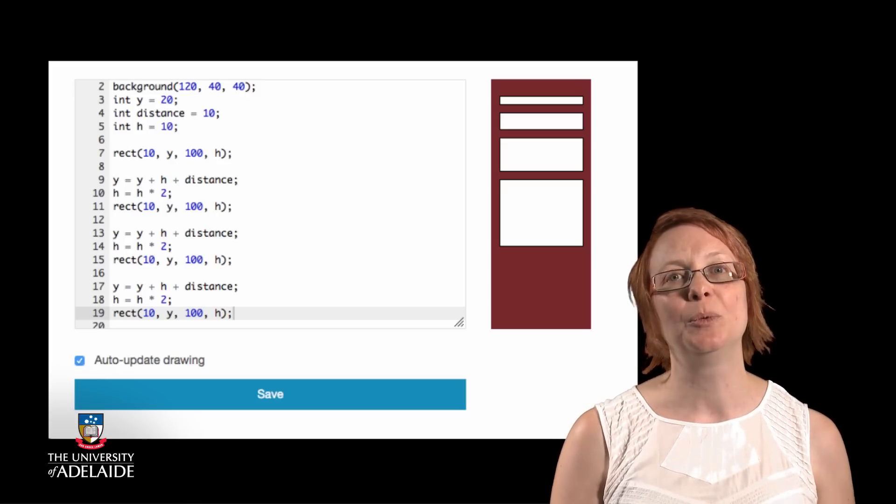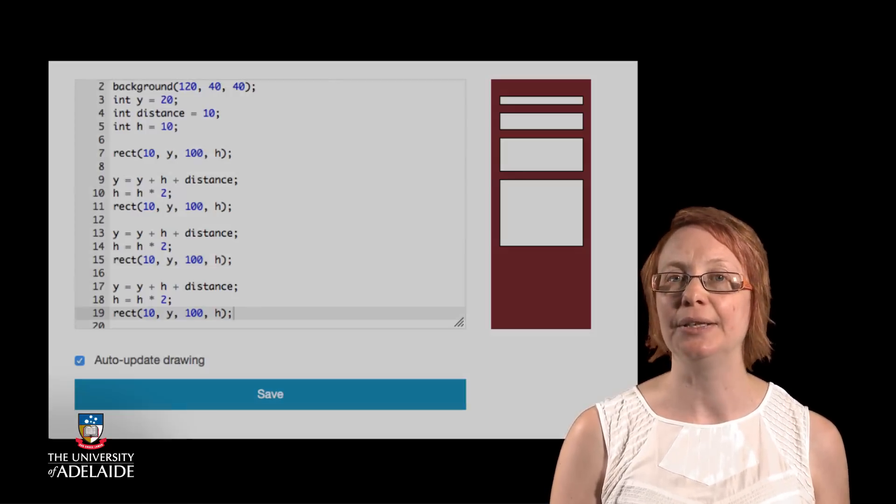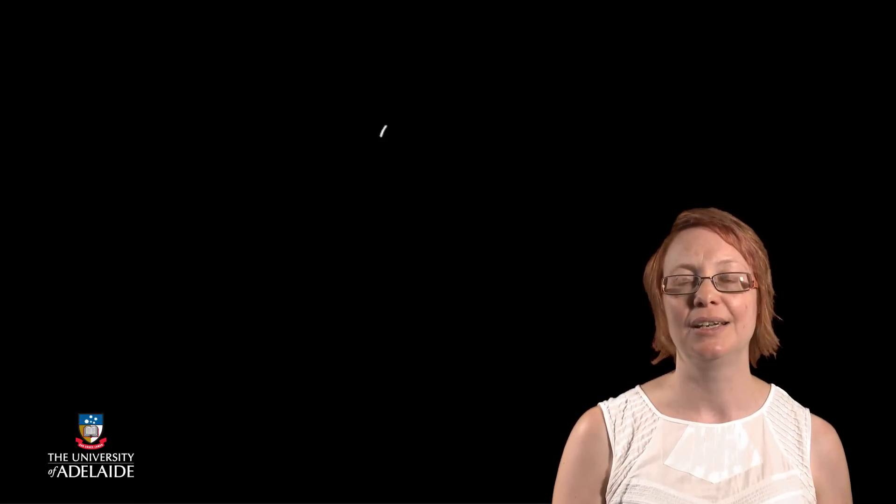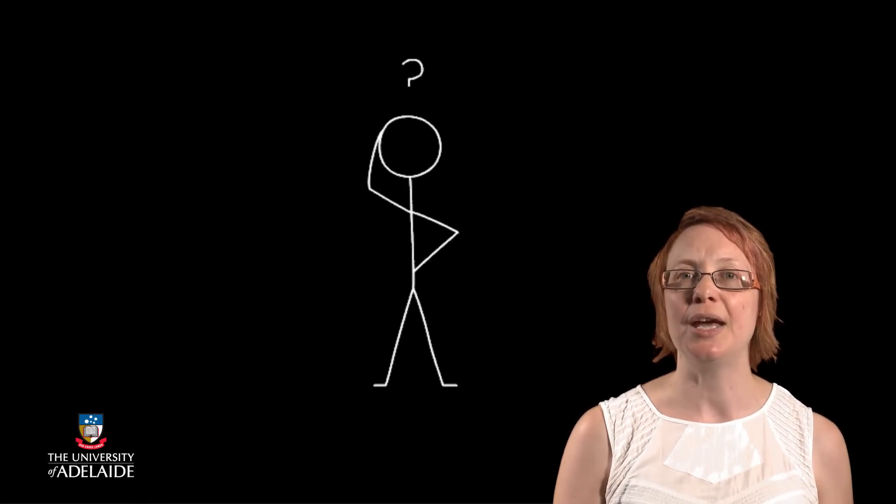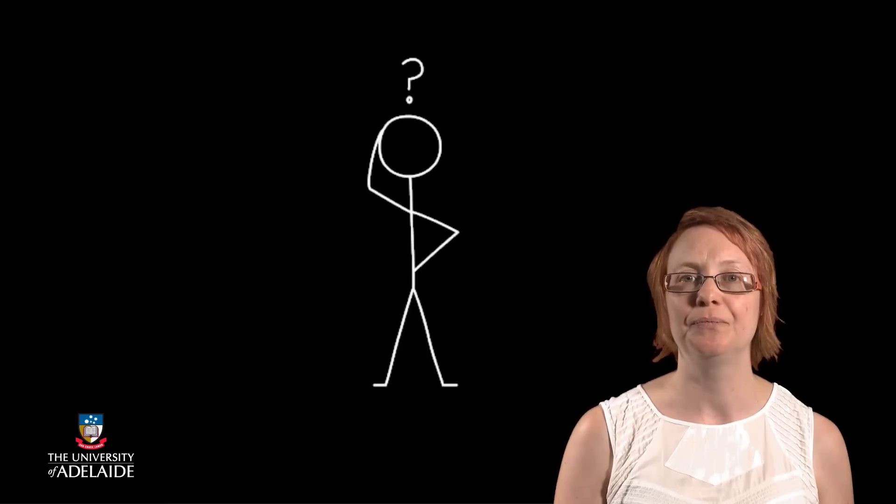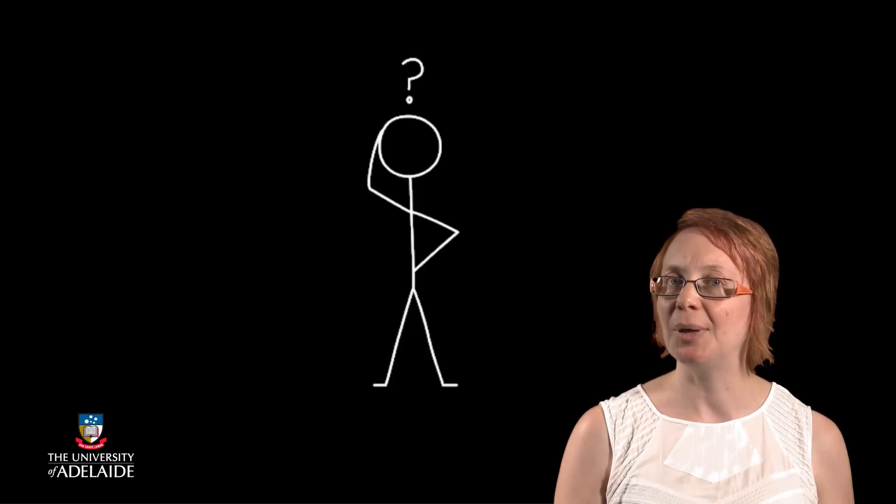We can see that it would be very easy to change the way that the rectangle height is calculated throughout our program. Imagine what would happen if we wanted the height of each rectangle to be multiplied by 10 each time. Would our program maintain its regular spacing?